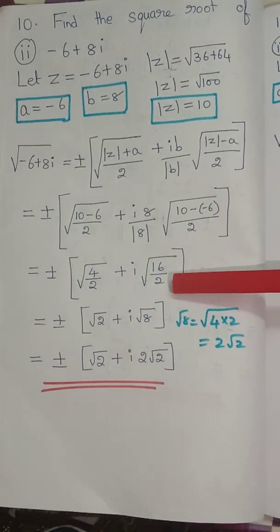Now substitute into the formula. Note that in this question, b is negative (minus 12), so b by modulus of b gives minus 1, which brings a minus sign into the imaginary part. Substituting: modulus of z is 13, a is minus 5. So 13 plus (minus 5) is 8 by 2, and 13 minus (minus 5) is 18 by 2.